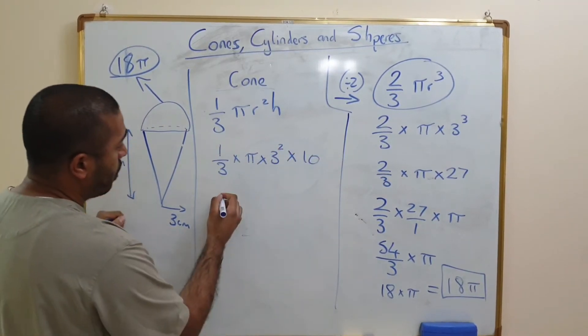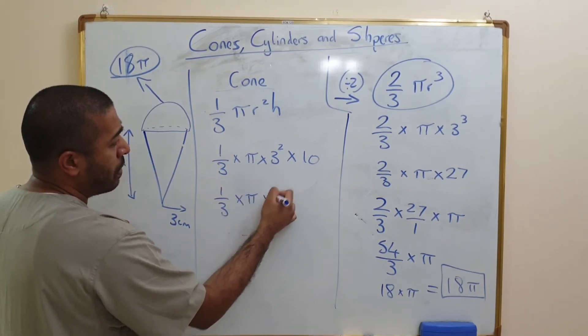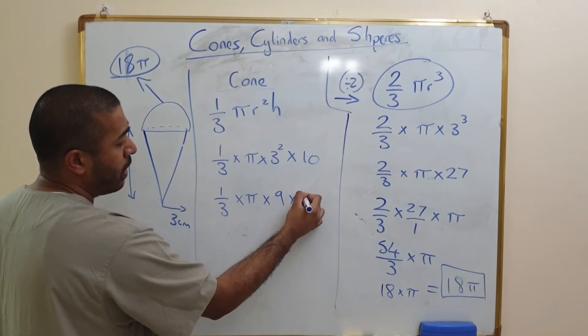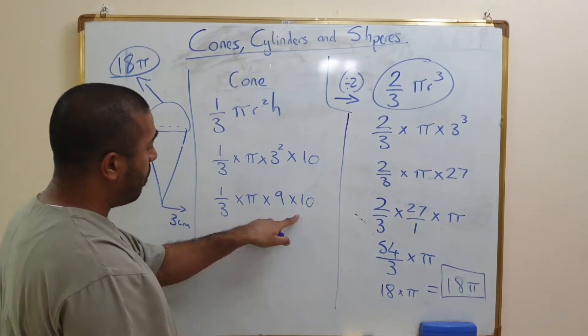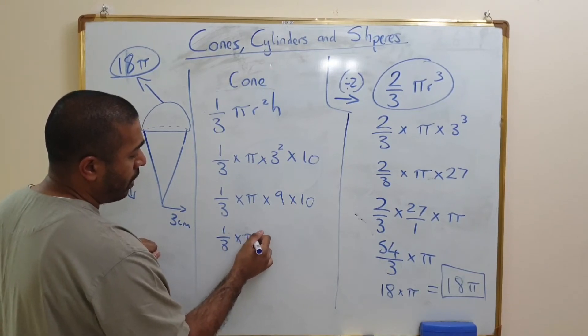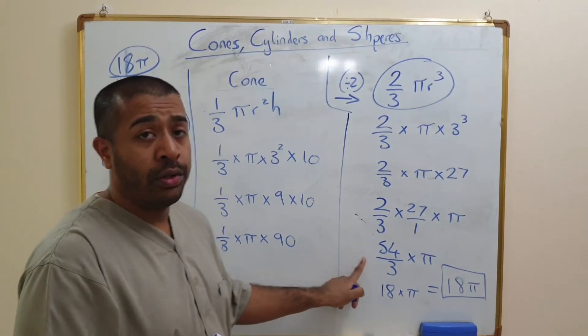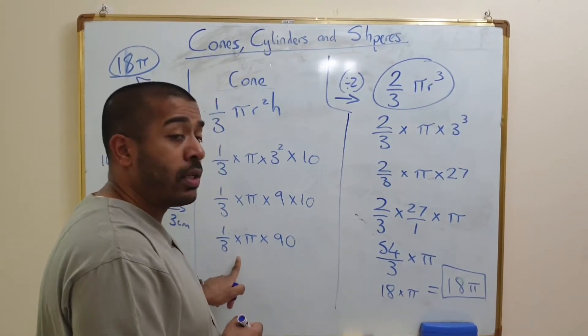It's 1/3 times by pi times by 9 times by 10. So we can simplify this again, so it's 1/3 times by pi times by 90.